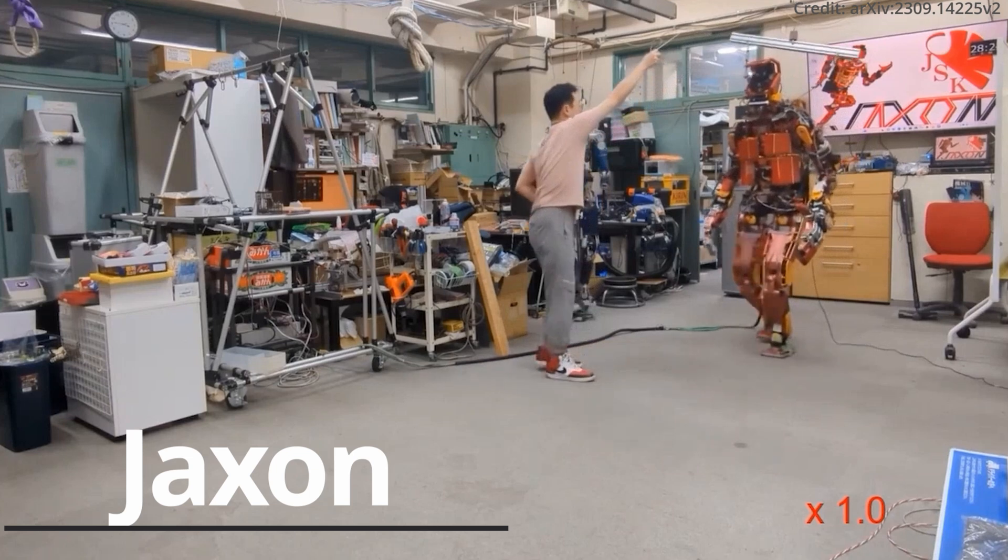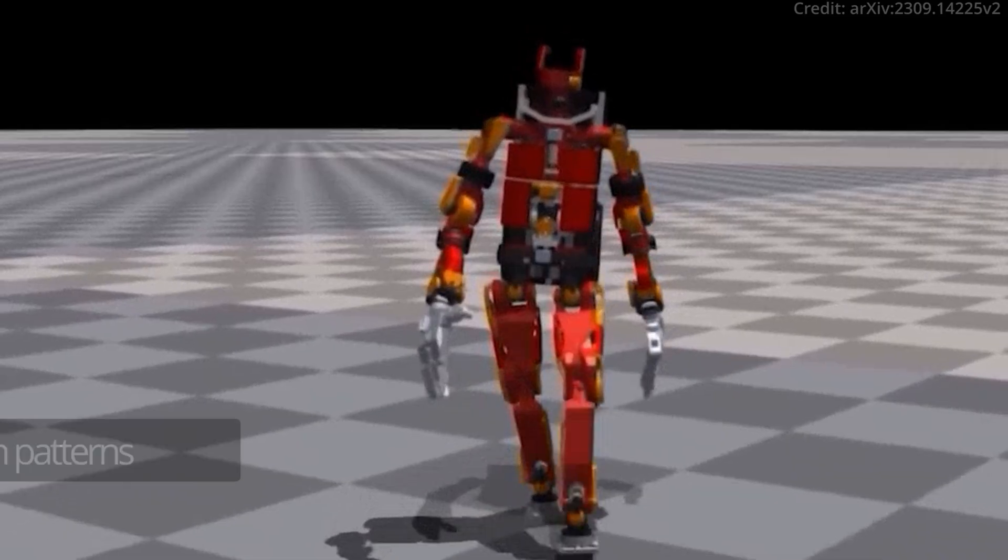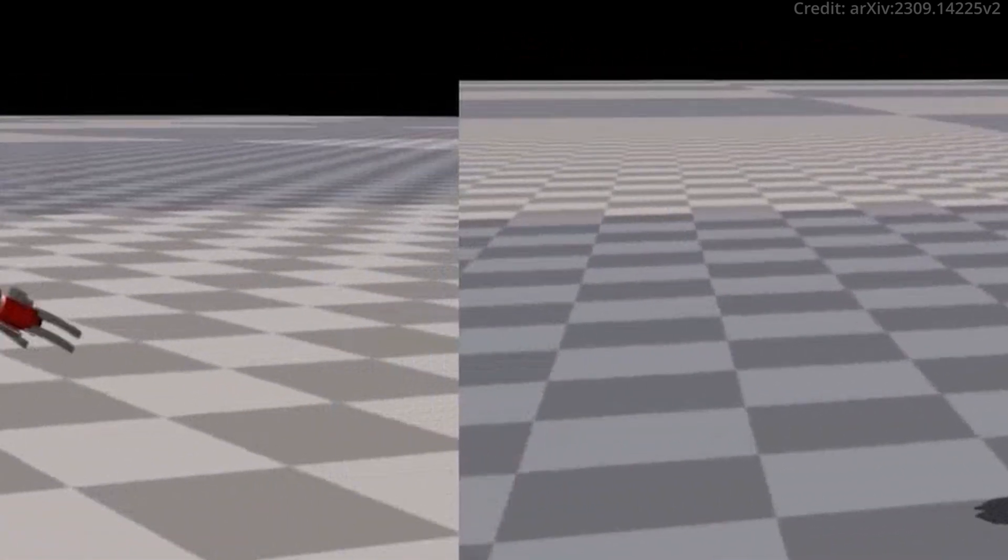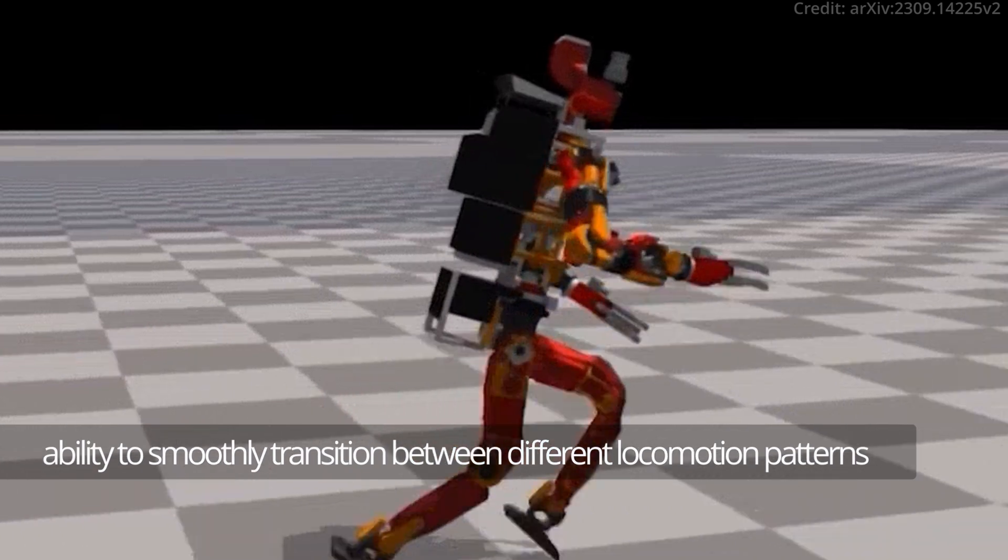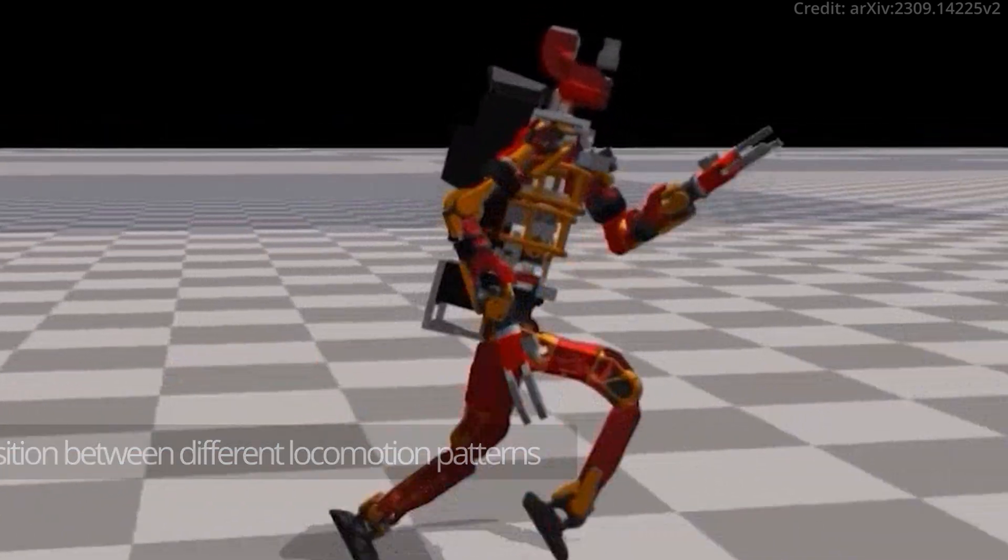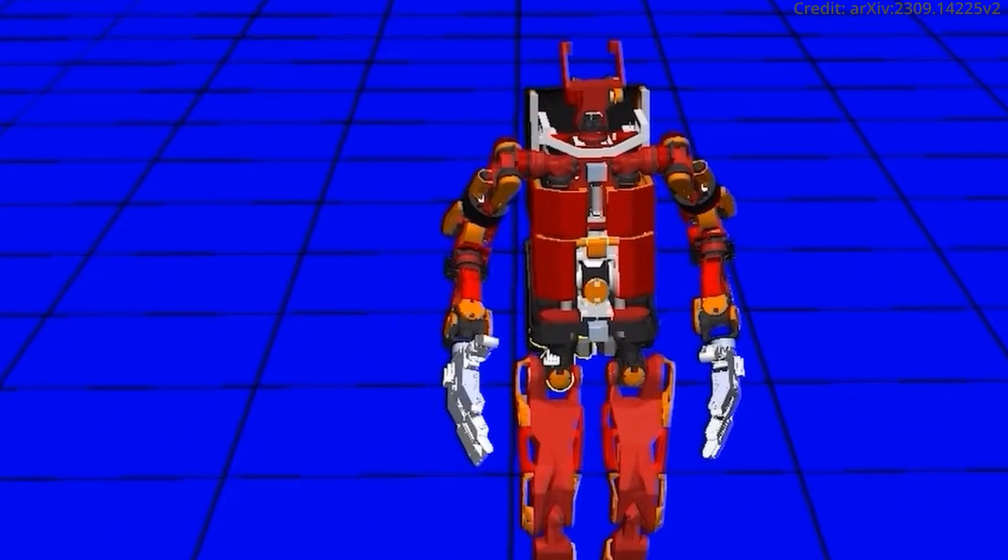Furthermore, their humanoid robot named Jackson can both execute and naturally transition between distinct locomotion patterns as the desired speed changes. This ability to smoothly transition between different locomotion patterns, particularly in the absence of transition motions in the demonstration dataset, is a marvel in robotic locomotion.